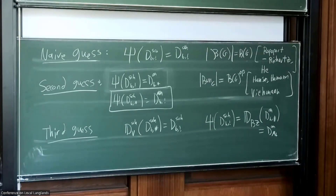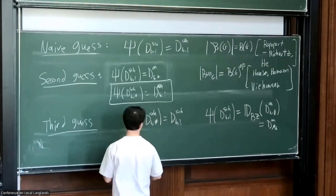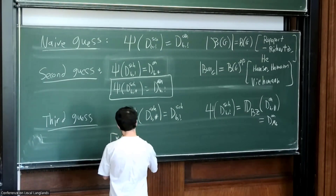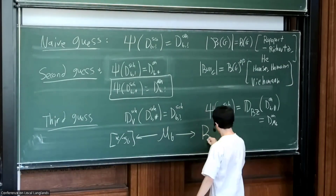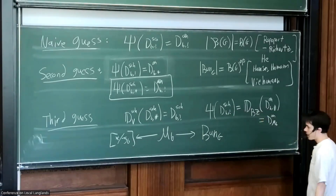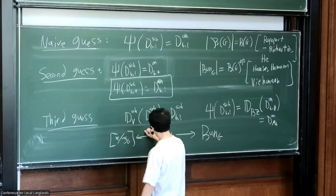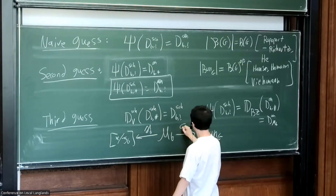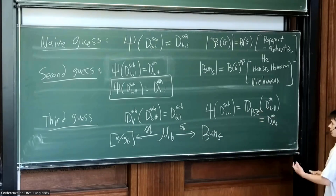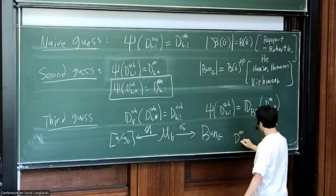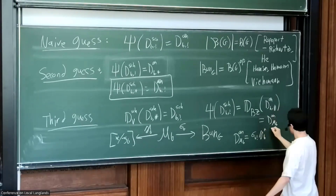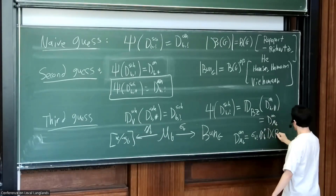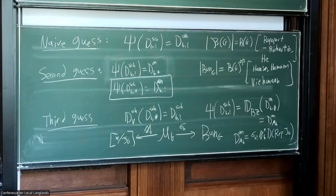There's a second way to construct this category using the famous Fargues-Scholze charts — maps gamma_b and sigma_b that already appeared in David Hansen's talk. Another way to construct this category is by looking at sigma_b-shriek gamma_b-star of Rep(G_b). Let me organize this third guess into a conjecture.